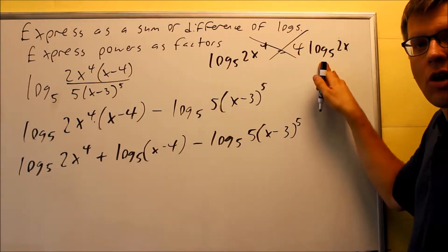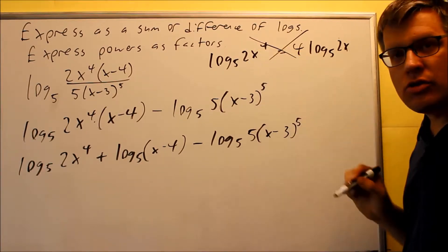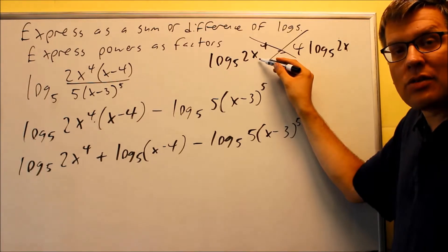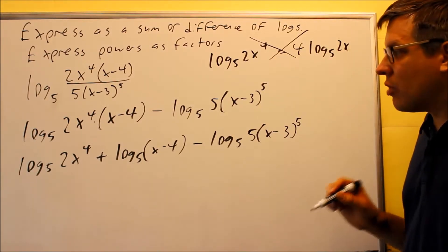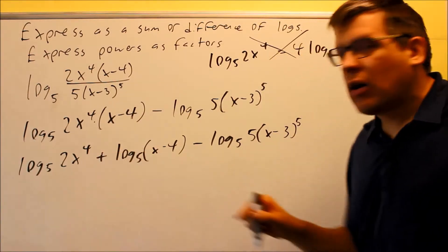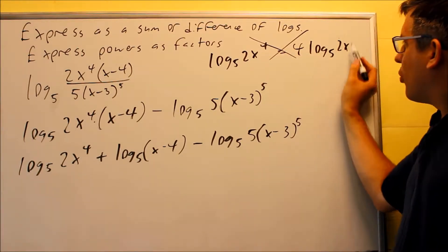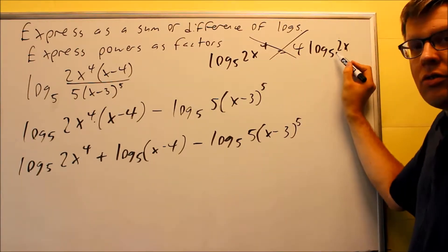In order for this to be correct, I would have to have parentheses around the entire 2x, because then the 4 would be applying to that whole base. Well, we don't have that in this case. We don't have parentheses around that, so the 4th power only applies to the x only. So bringing the 4 down and jumping over that 2, that's incorrect.